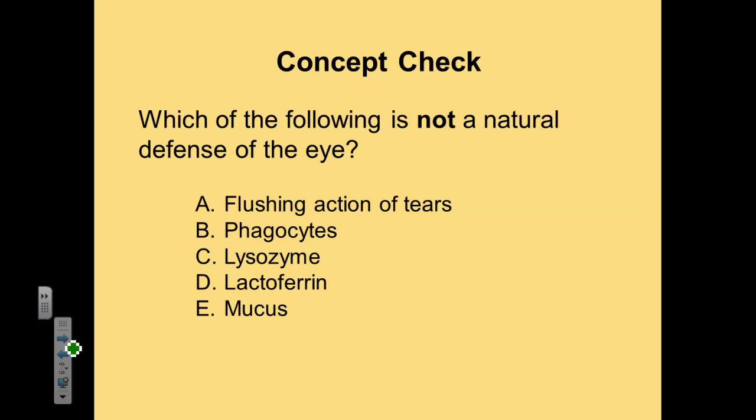Concept check: which of the following is not a natural defense of the eye? A) Flushing action of the tears, B) phagocytes, C) lysozymes, D) lactoferrin, or E) mucus. The correct answer is B, phagocytes. Our eyes are immunoprivileged, which means we don't have as many white blood cells patrolling our eye because those white blood cells would diffract light and obscure our vision.